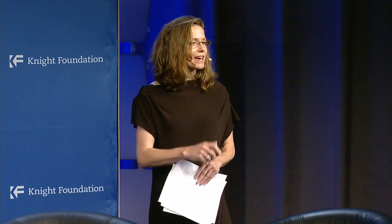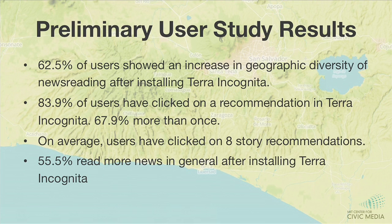We needed to source many news recommendations for the 1,000 cities. We sourced them from multiple locations — taking data from Instapaper, from other users' browsing history in the system, a crowdsource campaign, human curators, and live real-time APIs like Bitly. We prioritized alternative and local media over mainstream media, and even so there are huge numbers of blind spots. It is still really difficult to get information in English about certain places in the world.